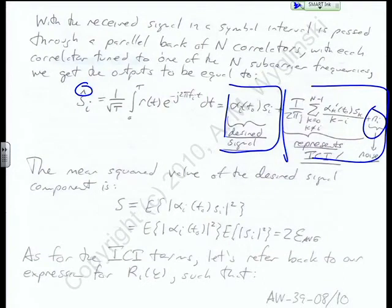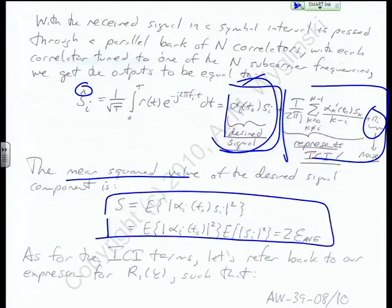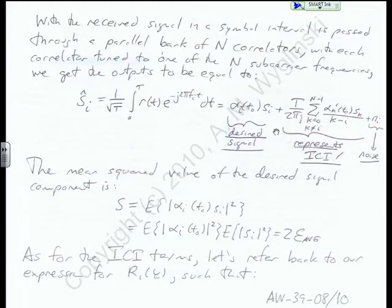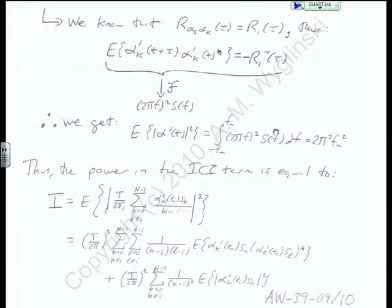We get this guy here - this actually is our desired signal, just slightly attenuated. Unfortunately, this stuff here - except for him - this stuff is ICI, stuff that's spilling over from one subcarrier to the other. Bad. And then of course noise.